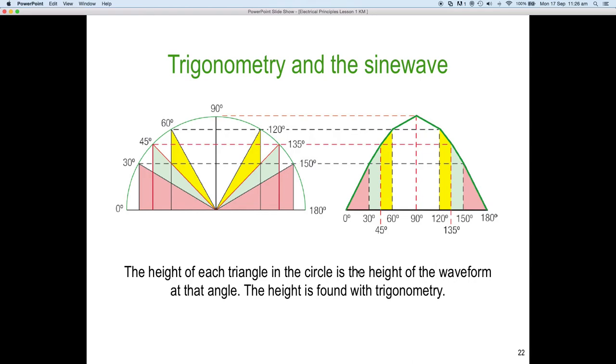Finally, the height of each triangle in the circle is the height of the waveform of that angle. The height is found with trigonometry. So, here's just what I was saying earlier. They've just done half a circle. In this particular case, we've done the top half a semicircle, and again, we've plotted the circle itself against the circle circumference over here on the horizontal. We've plotted out the sine wave, and you can see here at 30 degrees, there is a triangle.